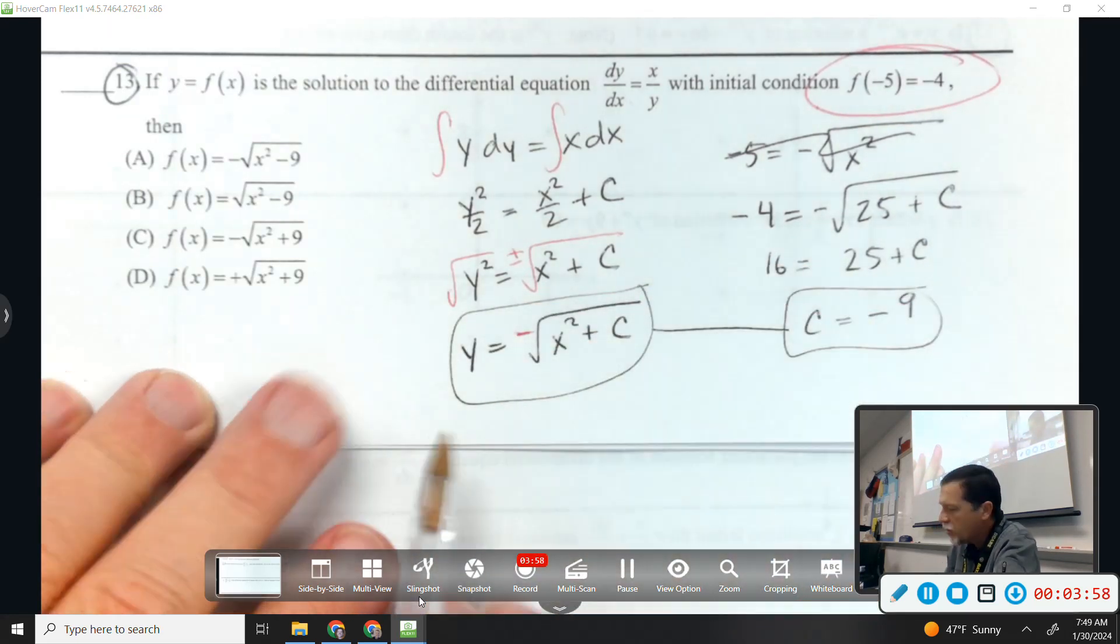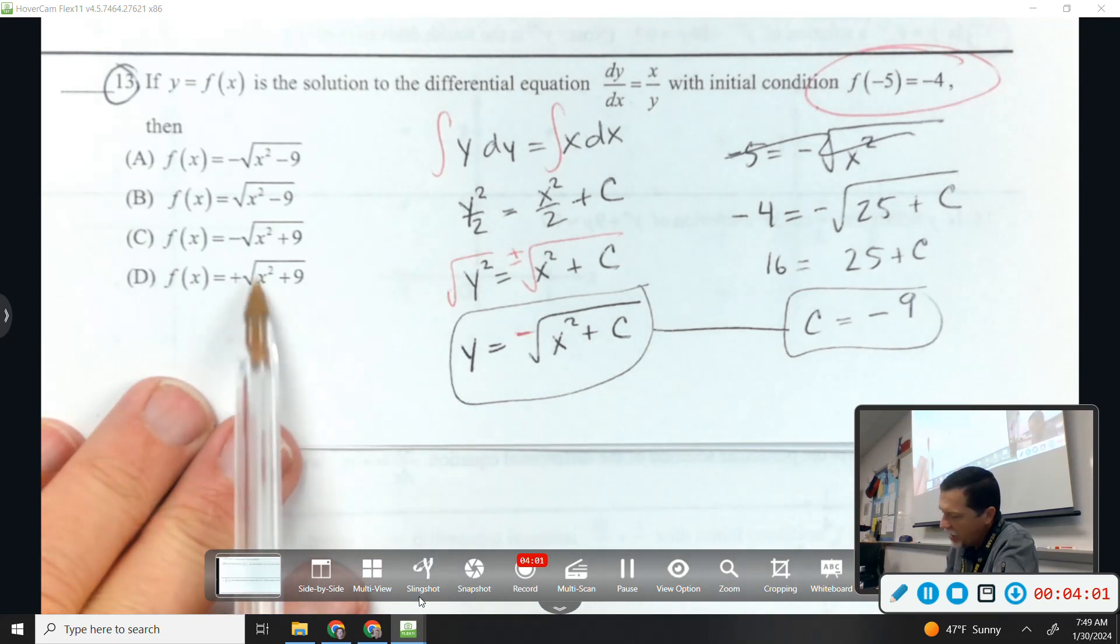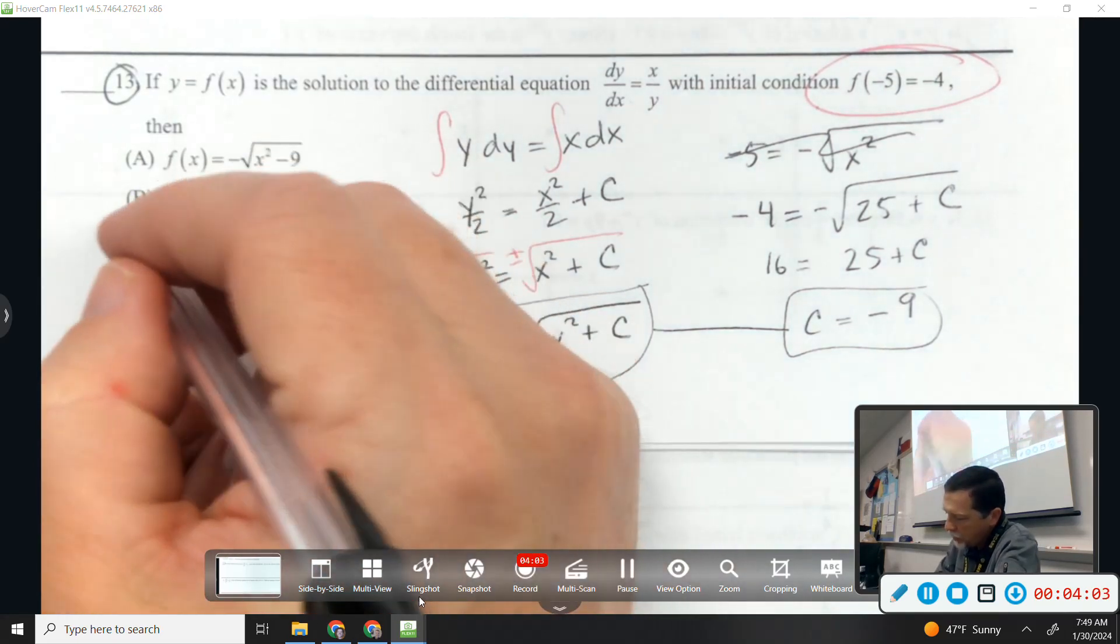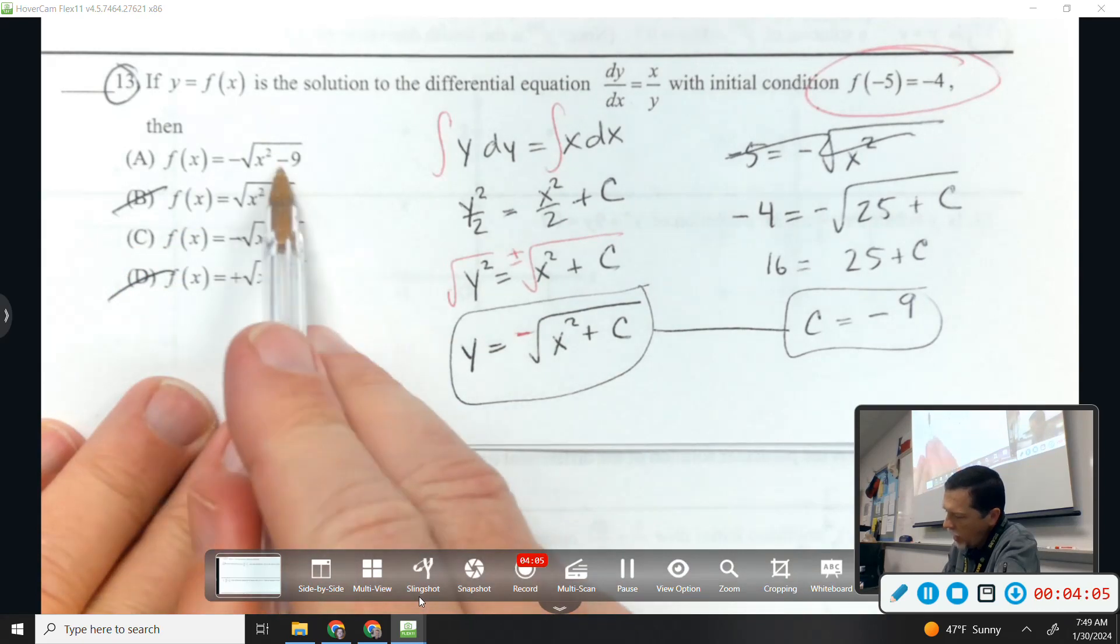So there's, oh, it's multiple choice. So let's put those two things together. There's a negative out front and x squared minus 9.